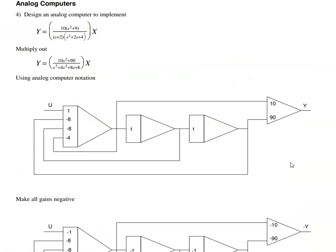Problem 4 is analog computers. I can also implement any differential equation using op-amps. The trick is to multiply it out, solve for the highest power, and I get s cubed y is minus 4s squared y minus 8sy minus 8y. So s cubed y is minus 4 times s squared y. Integrate, I get s squared y minus 8 times sy minus 8 times y.